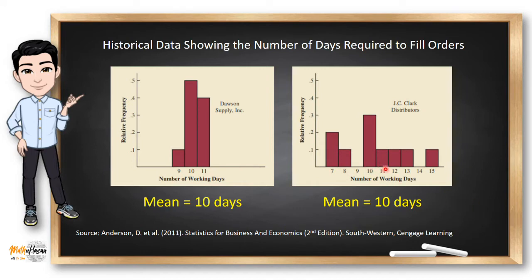The 7 or 8 deliveries shown for J.C. Clark distributors may be viewed favorably. However, a few of the slow 13-to-15 day deliveries could be disastrous in terms of keeping a workforce busy and production on schedule. This example illustrates a situation in which the variability in the delivery times is more favorable, which would make Dawson Supply the preferred supplier.